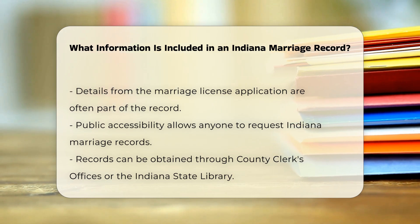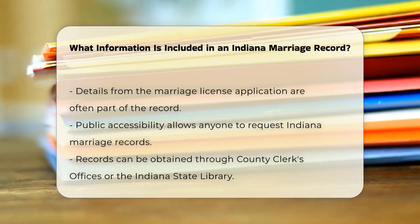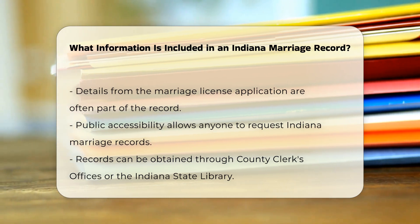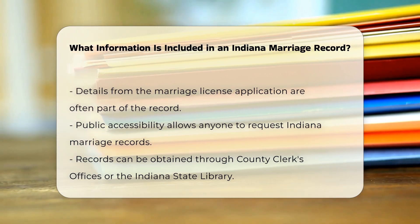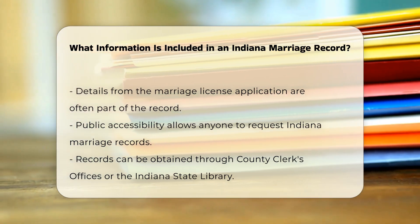Marriage license details. For marriages, the record often includes details from the marriage license application. This can involve information about the applicants, such as their ages, residences, and other relevant details.